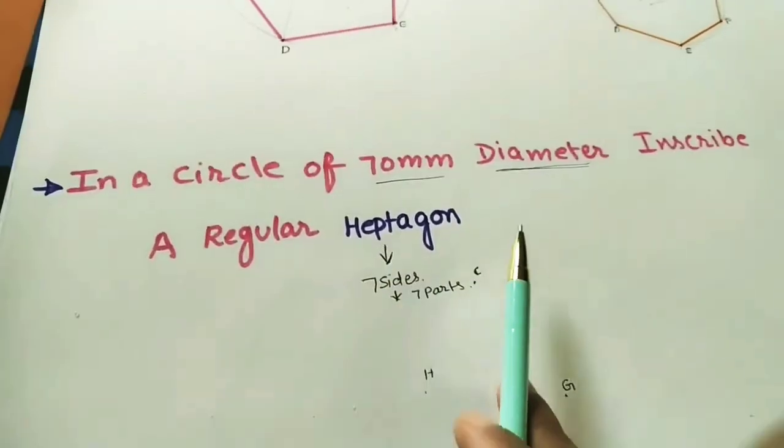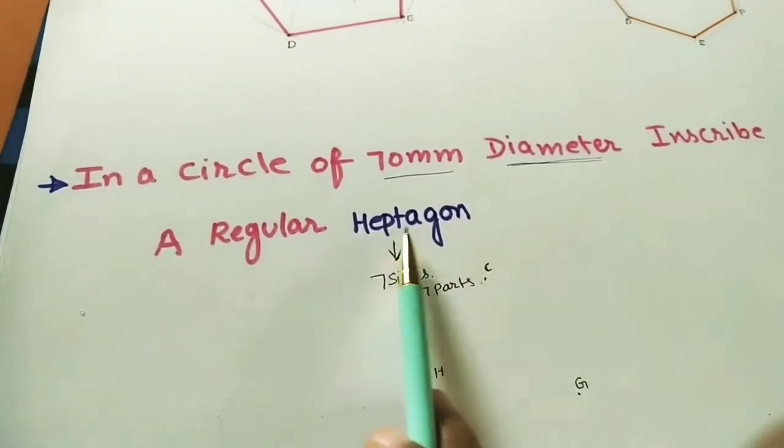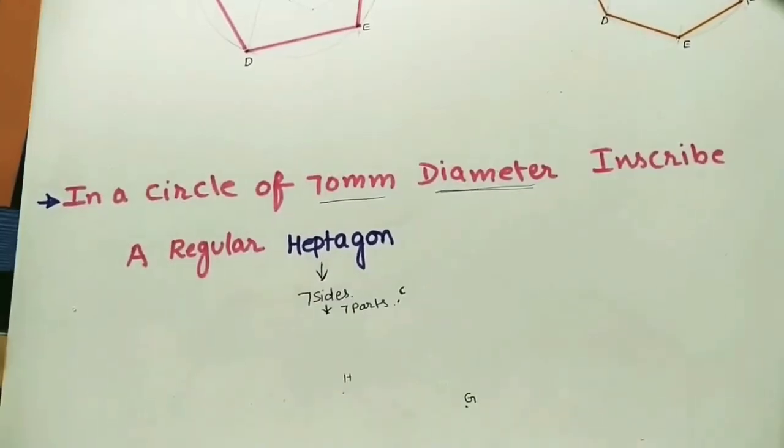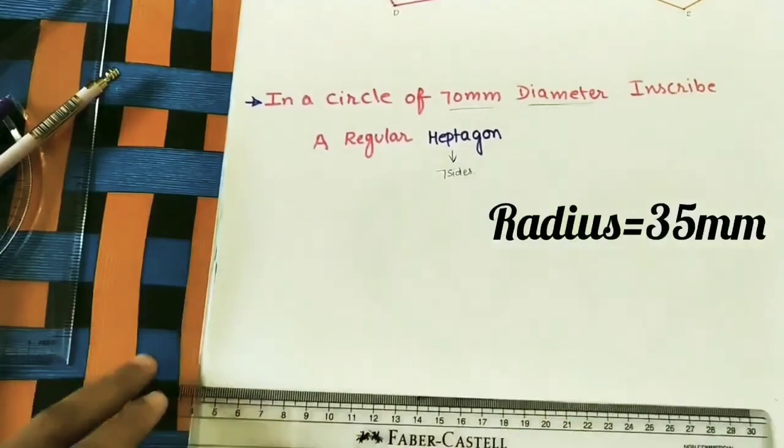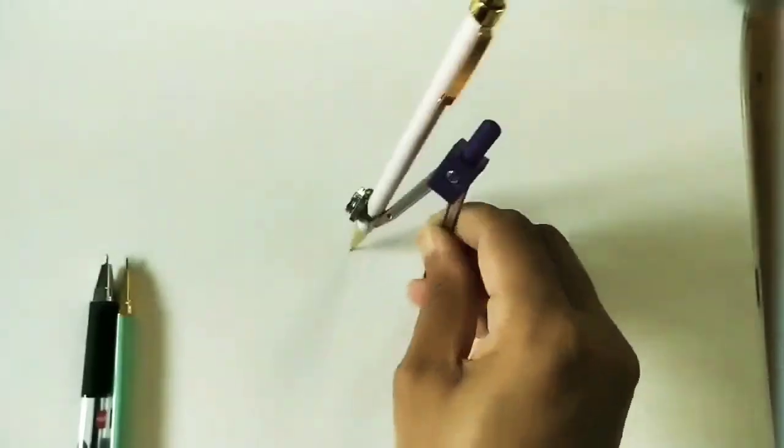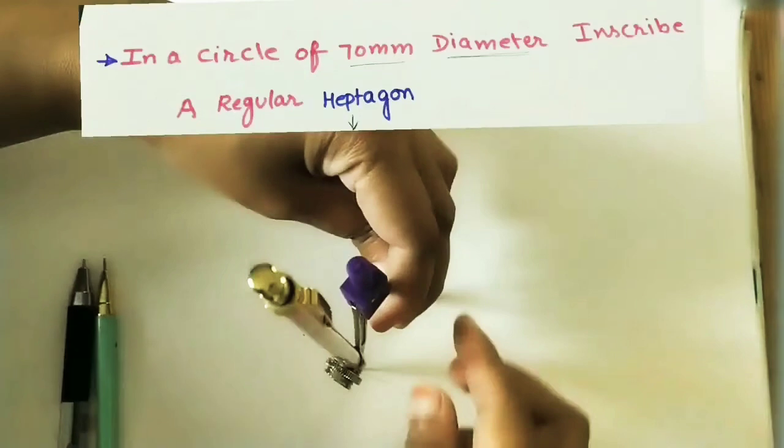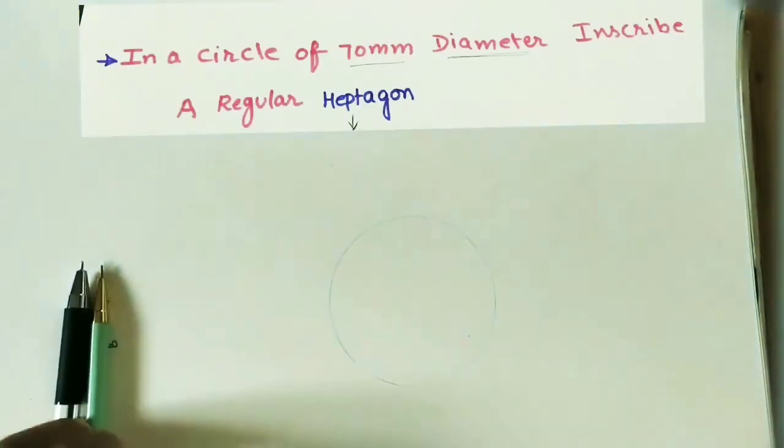After drawing the heptagon we can find the side length. For drawing the heptagon, first draw a circle of 7 centimeter diameter, radius is 3.5 centimeter. Using a compass, draw the circle and mark the center as O.